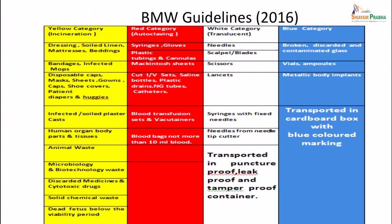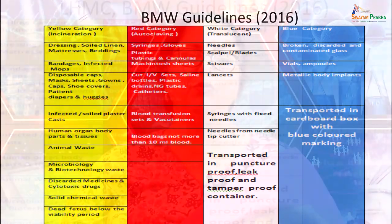To summarize the 4 categories: yellow category waste needs to be incinerated; red category needs to be autoclaved; white translucent category is transported in puncture-proof, leak-proof containers; blue category uses cardboard boxes with blue colored markings for discarded glass. It is important to follow these rules under the 4 categories as designated per the 2016 guidelines.